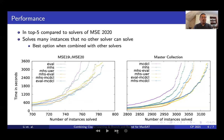The new solver solves many instances that no other solver can solve, so it is the best option to combine with other solvers to solve the highest number of MACSAT instances.